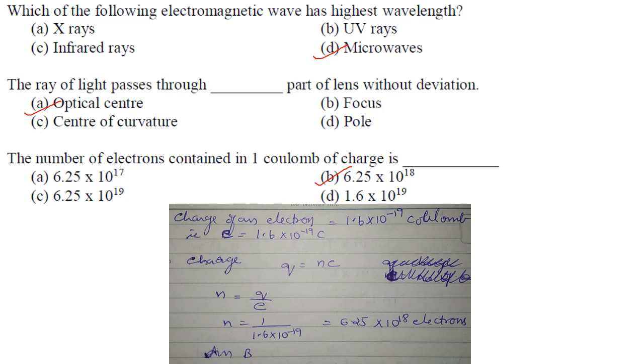Then the ray of light passes through which part of a lens without deviation? So it passes through the optical center of a lens without deviation.